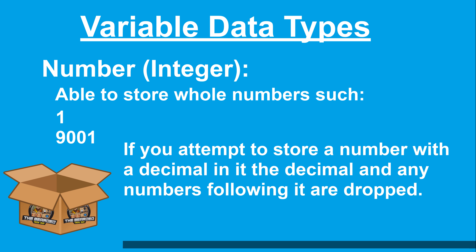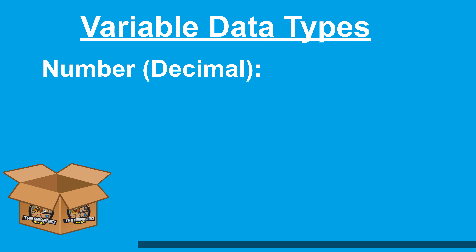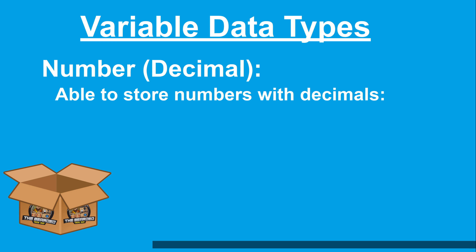If you attempt to store a number with a decimal in it, the decimal and any numbers following it are dropped. Instead, you should use the other type of number variable, which is decimal. Just like the name sounds, you are able to store decimal numbers such as 1.2 or 100.1234.